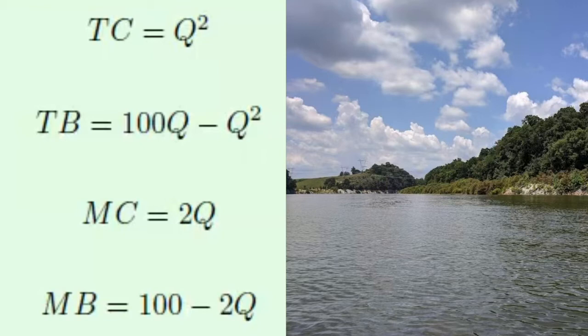In this example, the total cost associated with allowing lake acres to be used for economic reasons is captured by the function: total cost equals Q squared, where Q is lake acres. The total benefit is 100Q minus Q squared. To find how many lake acres to allow, we could calculate net benefits — total benefits minus total costs — for every additional lake acre and see which number maximizes net benefits.